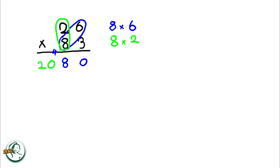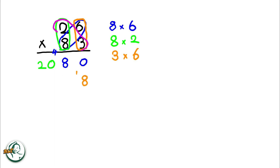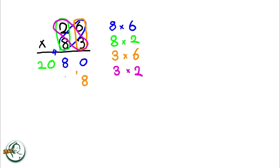Moving on to the other number, 3 multiplied by 6 is 18. We write down the 8 and carry over the 1. Next, we multiply 3 by 2, resulting in 6, and adding the carried over 1 to 6, we get 7.